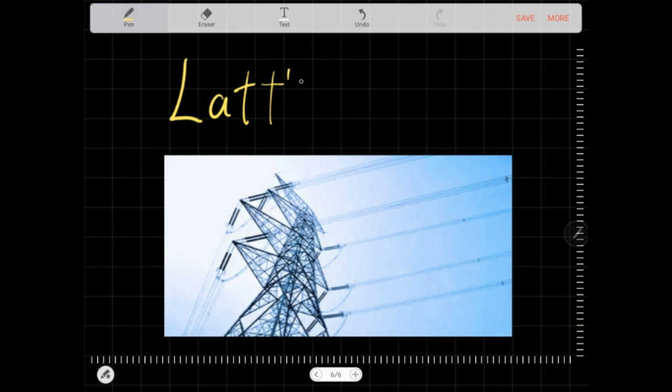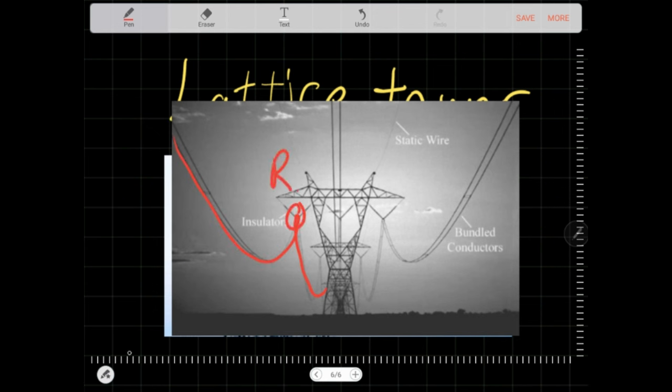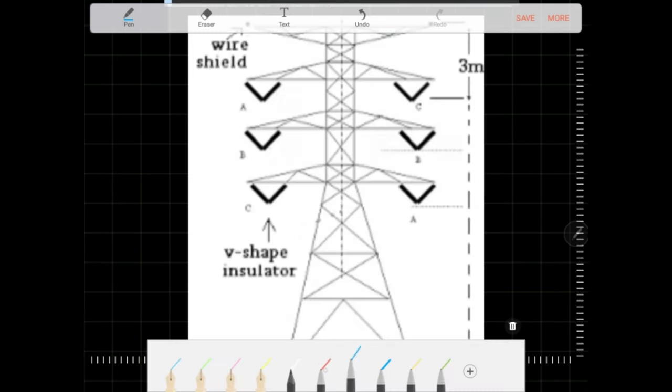This is a lattice tower. They take up more space and it is more affordable to implement. FYI, this is also a lattice tower. It is just a single circuit lattice tower since it is only carrying a single set of red yellow blue. Well, this carries two sets of red yellow blue.